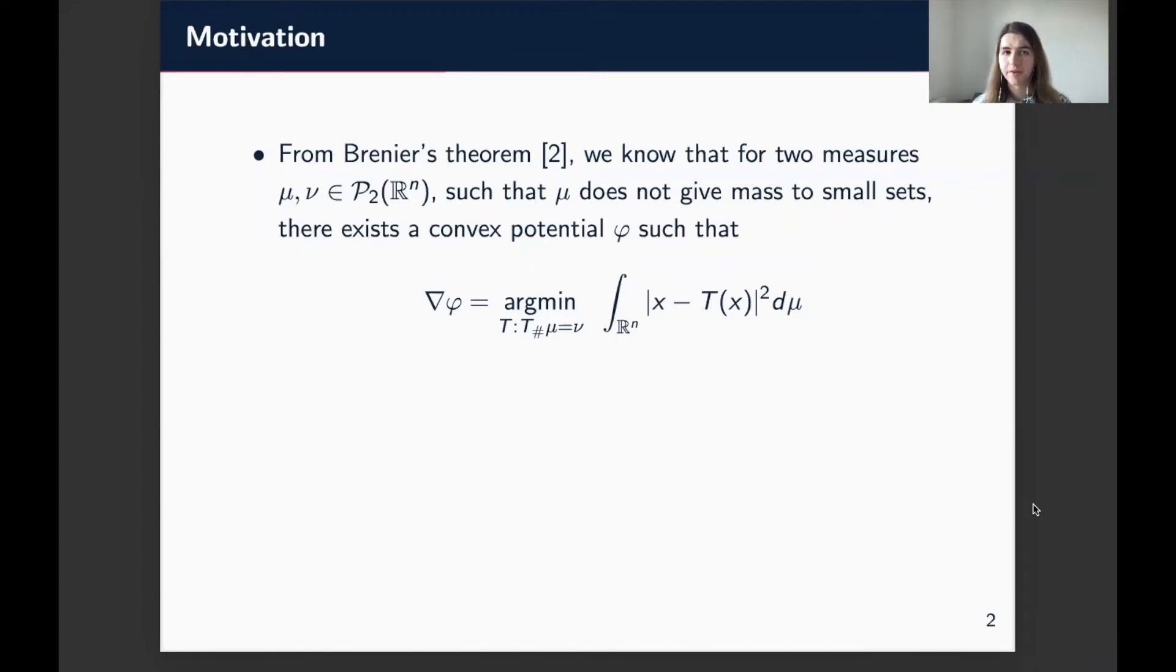So the motivation for this work basically comes from Brenier's theorem, which tells us that for two suitable measures on the Euclidean space, the solution to the optimal transport problem is not only realized as a map, but that map takes the form of the gradient of a convex potential phi.